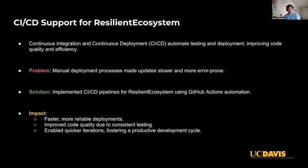CI/CD, or Continuous Integration and Continuous Deployment, automates testing and deployment, which helps improve code quality and operational efficiency. Without it, manual deployment was slow and prone to error. By implementing CI/CD pipelines for the entire ResilientDB ecosystem using GitHub Actions, I've enabled faster, more reliable deployments and more consistent testing. This has fostered a productive deployment cycle with quicker iterations.